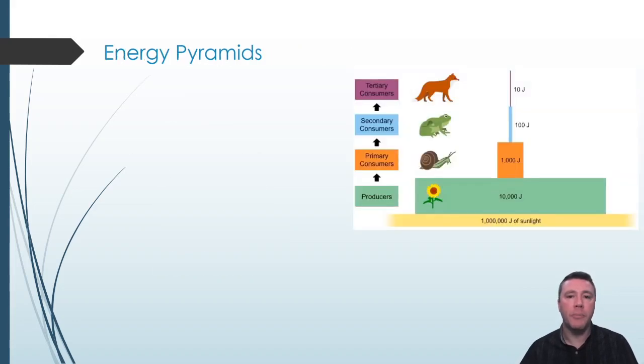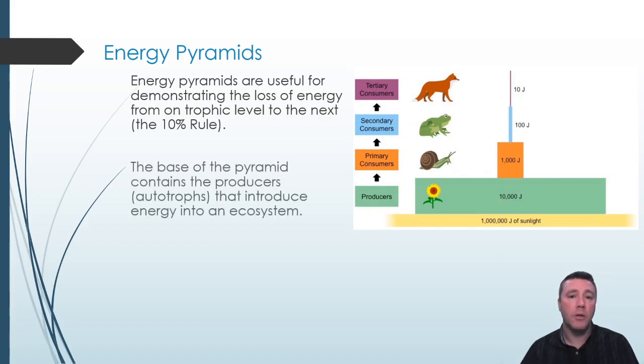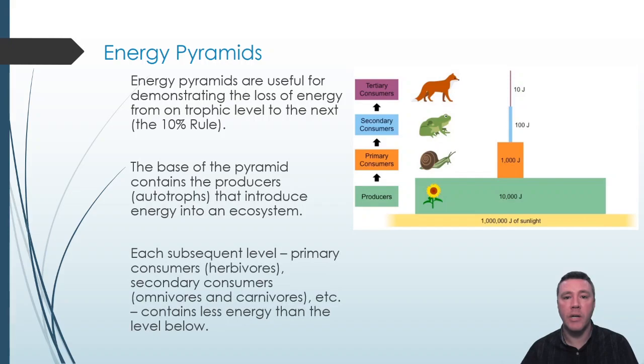An energy pyramid is useful in demonstrating the 10% rule that we just explored. It is meant to proportionally represent the energy that is available at any given trophic level. The greatest amount of energy resides with the producers. This model here illustrates 10,000 joules possessed by the producers. Each subsequent level—primary consumers, secondary consumers, and tertiary consumers—contain only 10% of the energy of the level beneath it.